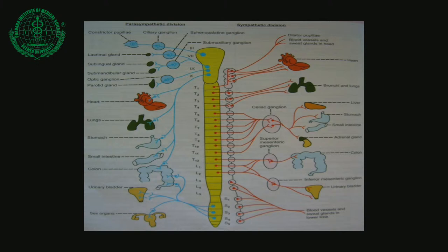There are 5 lumbar ganglia. The pre-ganglionic fibers for these ganglia arise from the first and second lumbar spinal segments, L1 and L2. From here the fibers extend down to the sacral ganglia also. The post-ganglionic fibers from these ganglia supply the abdominal and pelvic organs.